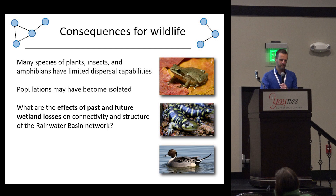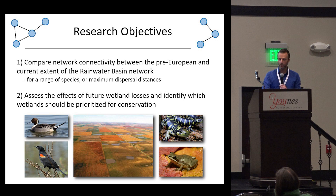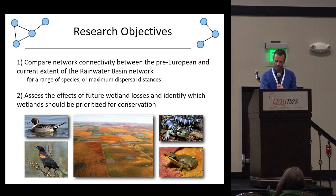That brings me to the question we tried to answer: what are the effects of past and future wetland losses on the connectivity and structure of this Rainwater Basin network? Our specific research objectives were comparing network connectivity between a historical pre-European landscape and the current extent of the Rainwater Basin network, and assessing the effects of future wetland losses to identify which wetlands should be prioritized for conservation.